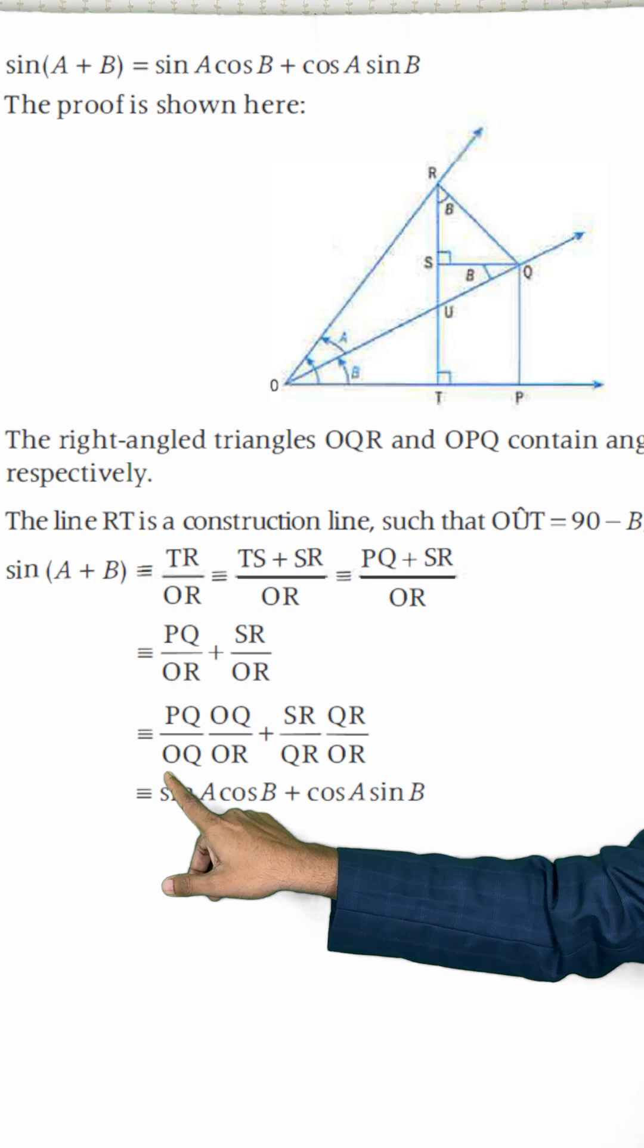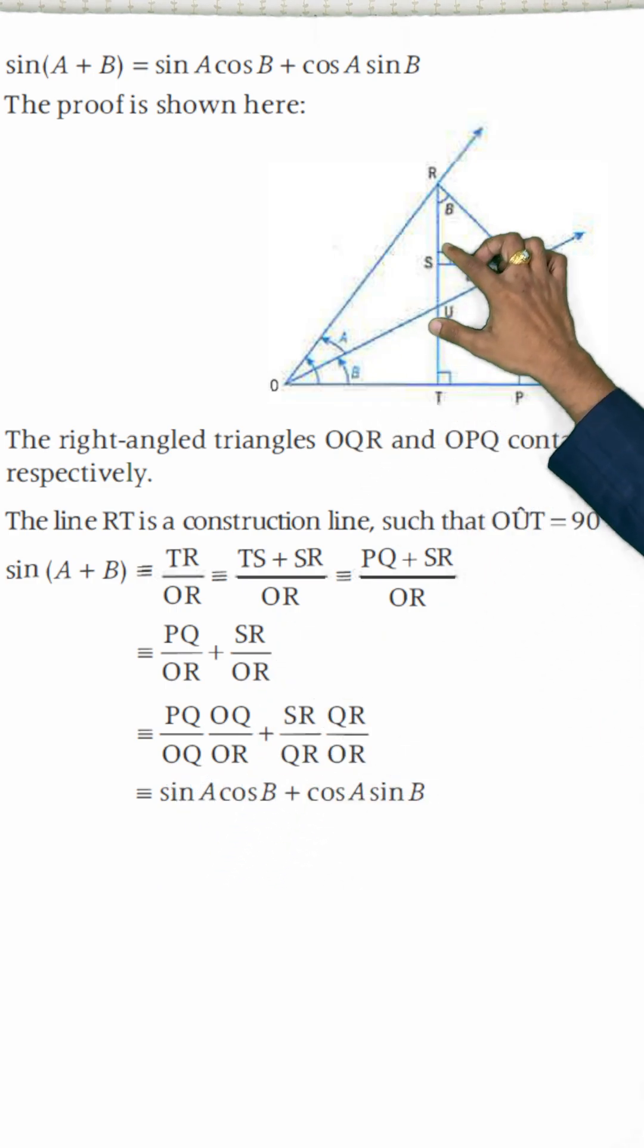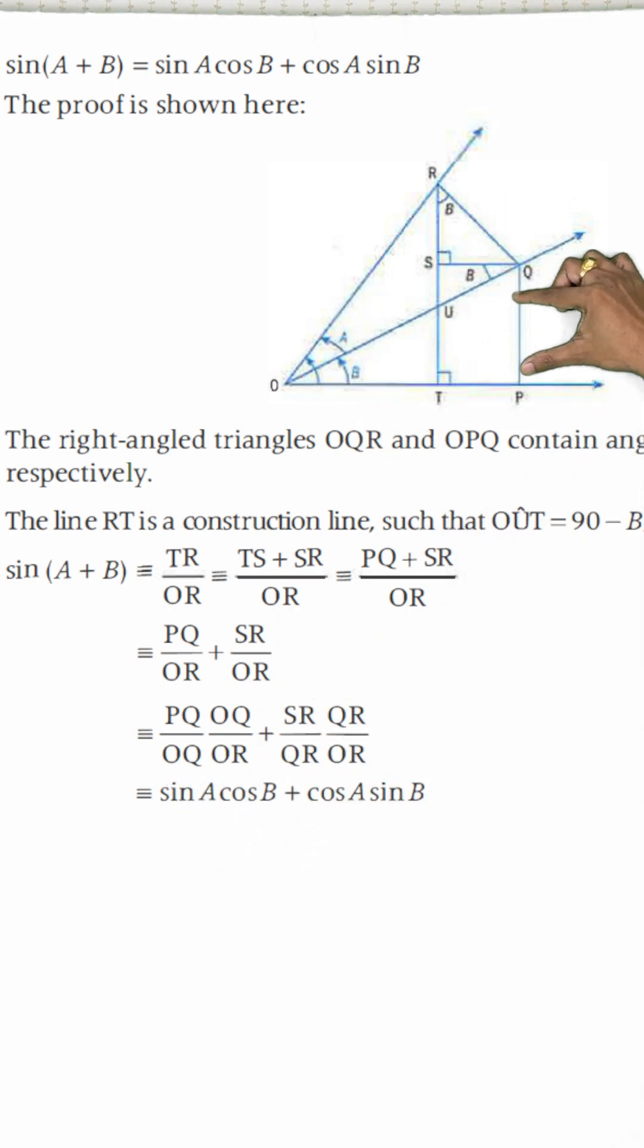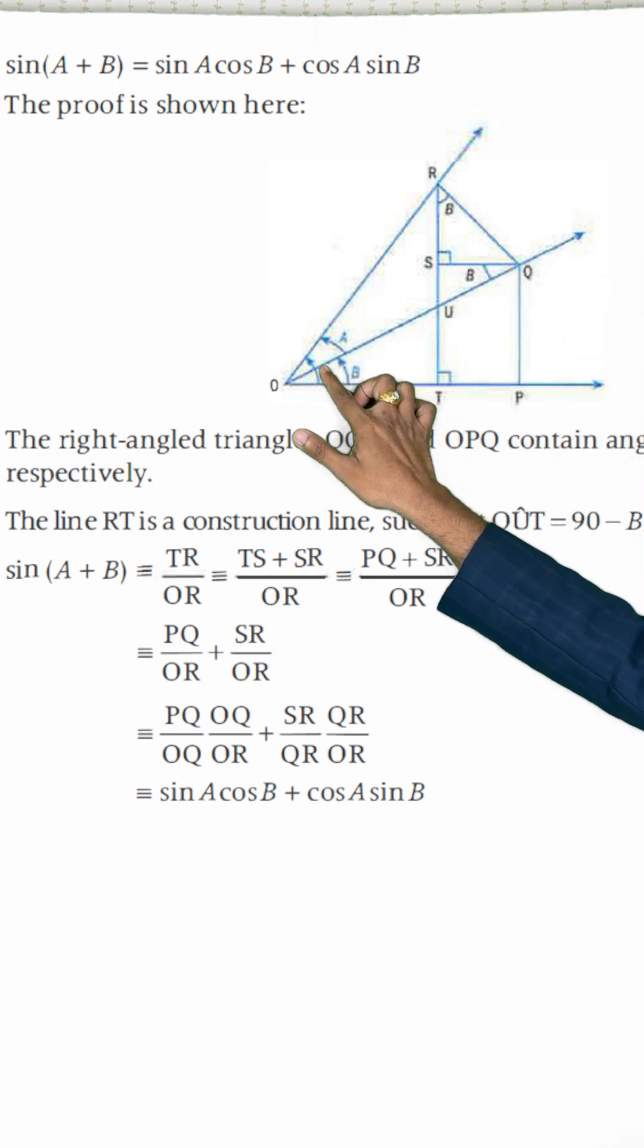So you can see here, for this triangle, PQ is the opposite side and OQ is the hypotenuse. Therefore, this is sine A.